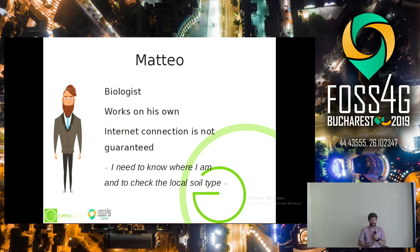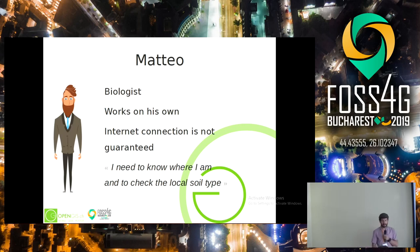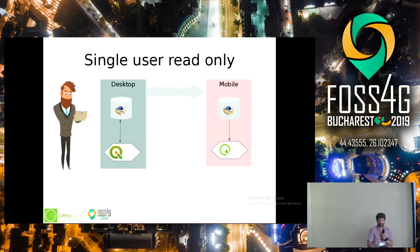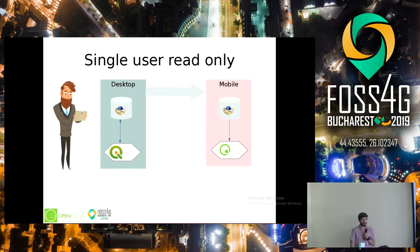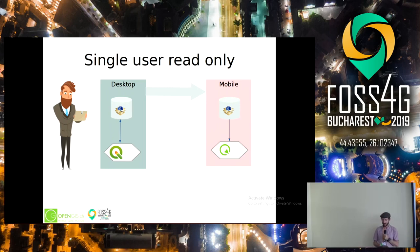Let's start with Matteo. Matteo is a biologist working on his own, and he does not always have internet connection when he goes out. He likes to go to the forest, and mostly what he needs to know when he's somewhere out in the field is where he is, and to see what the soil type is where he is. What Matteo does is he prepares at home on his QGIS desktop — and let's see if the pointer works, yes — he prepares a dataset in a geopackage, packages it all up, puts it onto his mobile phone or tablet, and just takes it out. Out there he can use QField to work with the data, see where he is, use the GPS, and request detailed information about where he is.